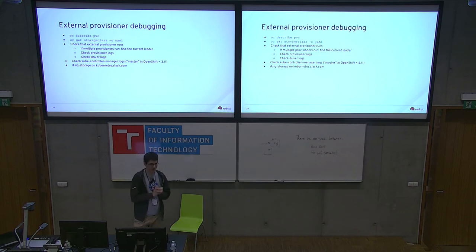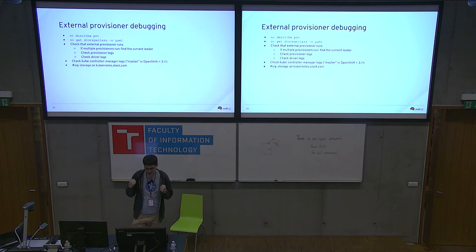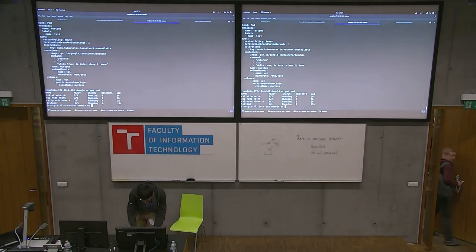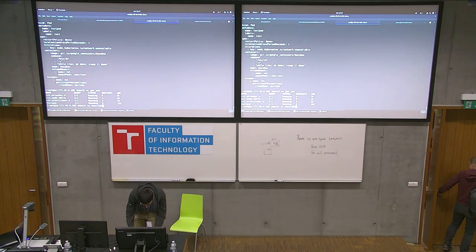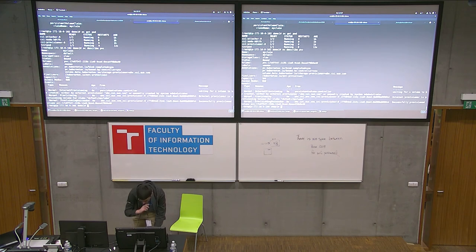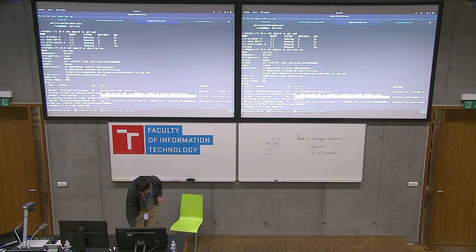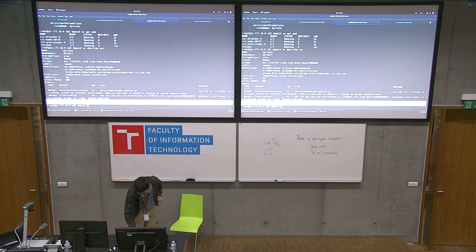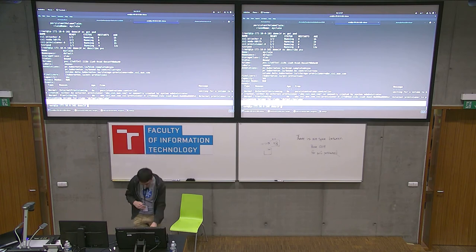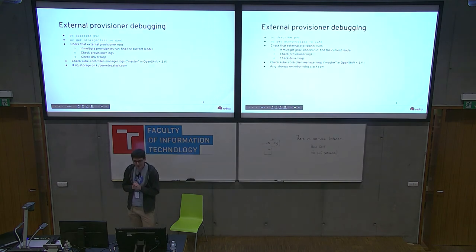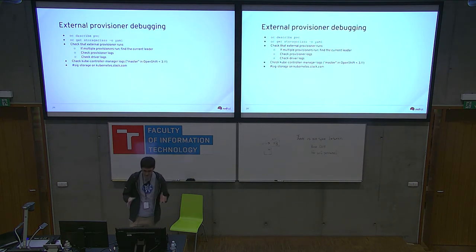You don't need to know the exact call flow, but you should know why the provisioner is there and why it's necessary. If dynamic provisioning doesn't work, you should know where to look. The first thing you should do is describe the persistent volume claim, because that's the place where the external provisioner sends events. In this case, I can see that the external provisioner started provisioning and it successfully provisioned something. If provisioning went wrong, you will see errors in the PVC. If it doesn't show anything useful, then you go to the logs of the provisioner and your driver.